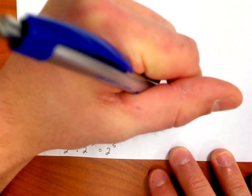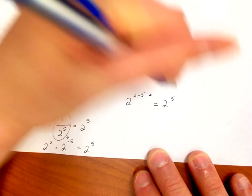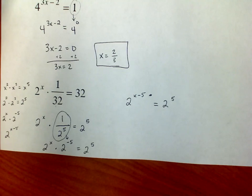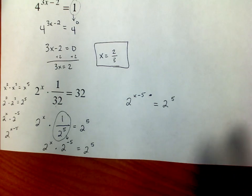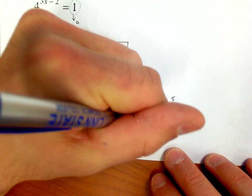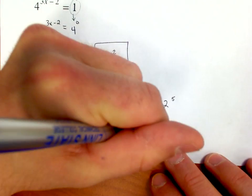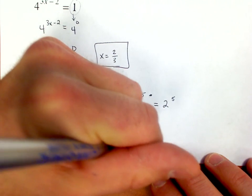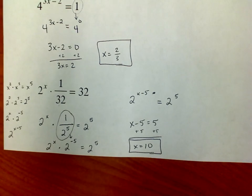And the right side is equal to 2 to the 5th power. And now I have them both in the same base. And so now I can say x minus 5 is equal to 5. Let's add the 5 to both sides. That means x is equal to 10. The answer is 10.